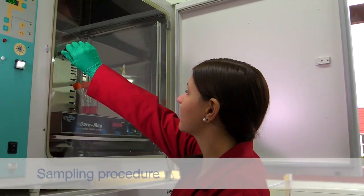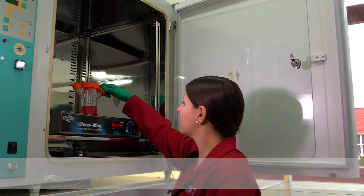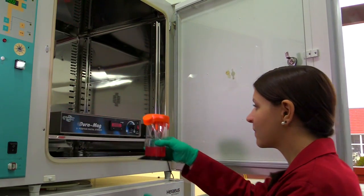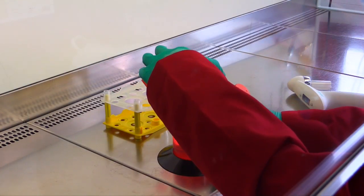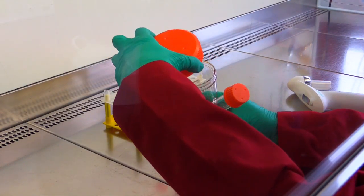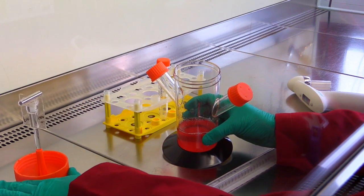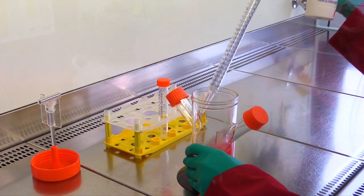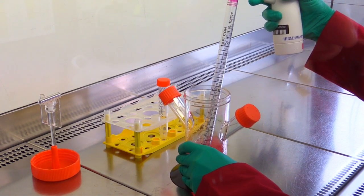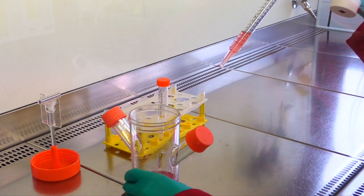For the sampling, the spinner flasks are transferred onto the laminar flow bench, but before removing the spinner flask from the incubator, all lids are closed. Then, every spinner flask is handled in the same way. The central lid with the impeller is opened and placed upside down at the back of the bench. The flask is shaken vigorously with one hand and simultaneously a 5 milliliter sample is taken with a 25 milliliter sterile pipette. The homogenous mixing is crucial to ensure reliable sampling.